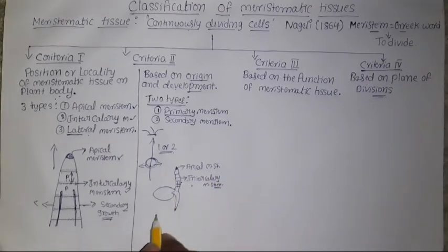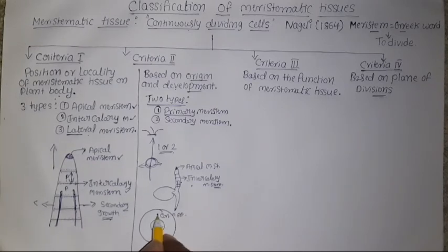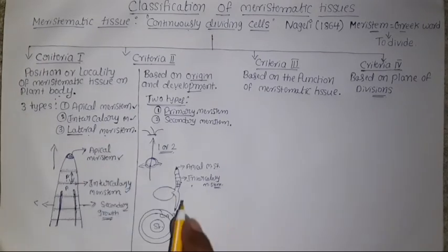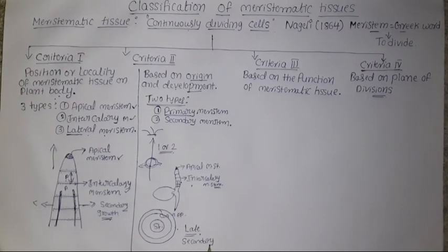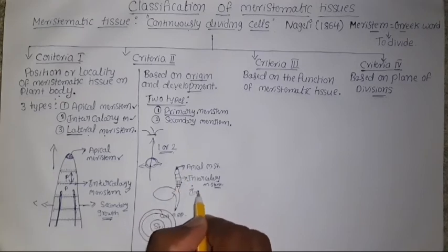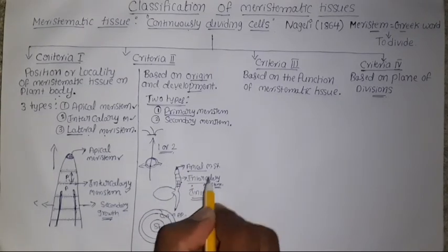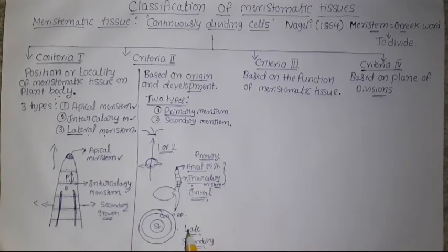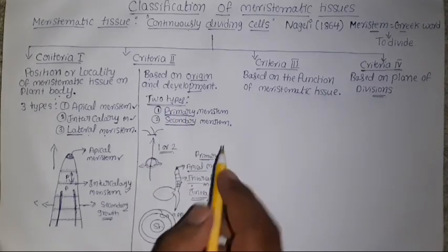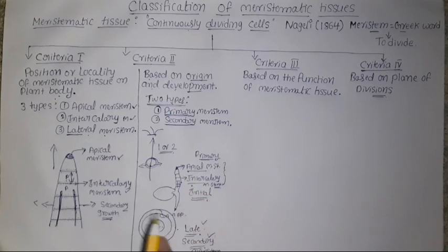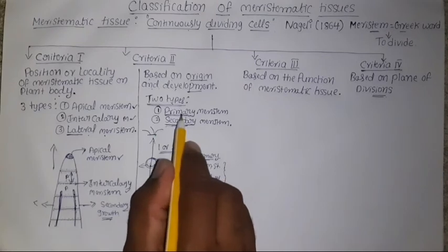Looking at a transverse section of stem: here is the outer layer called epidermis, in the center is the stele, and in between the stele and epidermis is the cortex. In the cortex we can see a ring of lateral meristem, which is formed at a later stage during secondary growth. The apical and intercalary meristems form together in the initial stage and are called primary meristem. The lateral meristem, formed later during secondary growth and located in the stele and cortex region, is called secondary meristem.